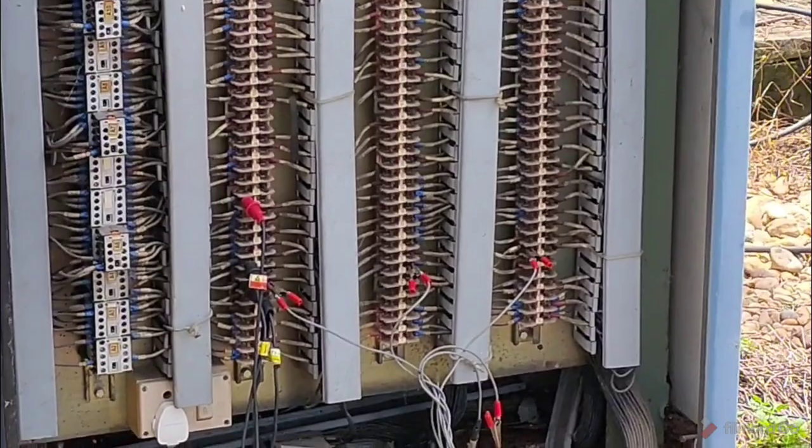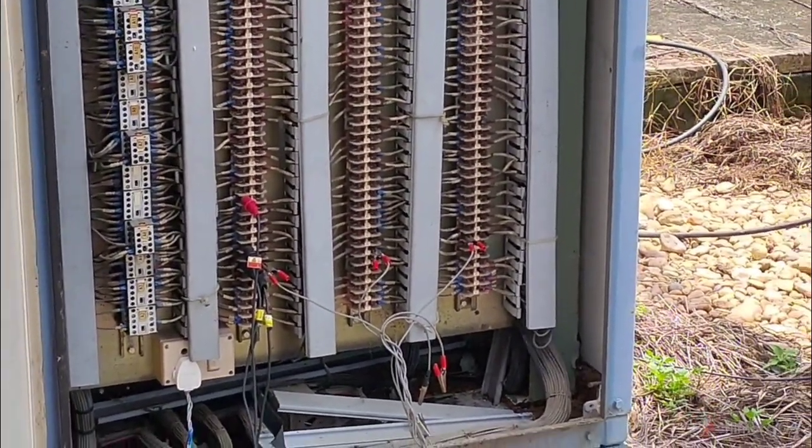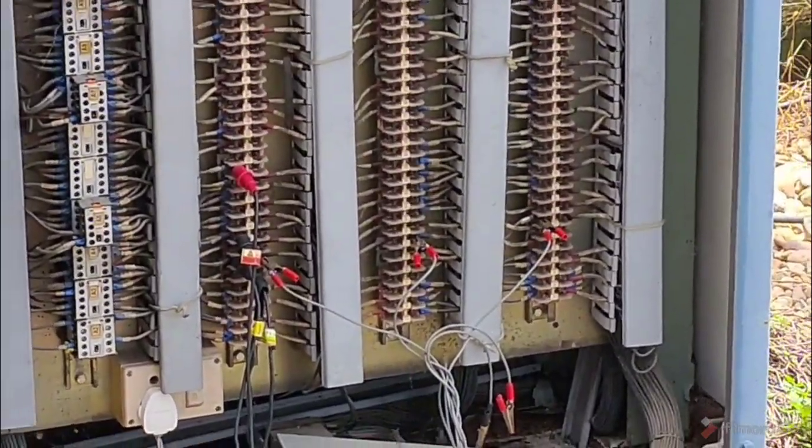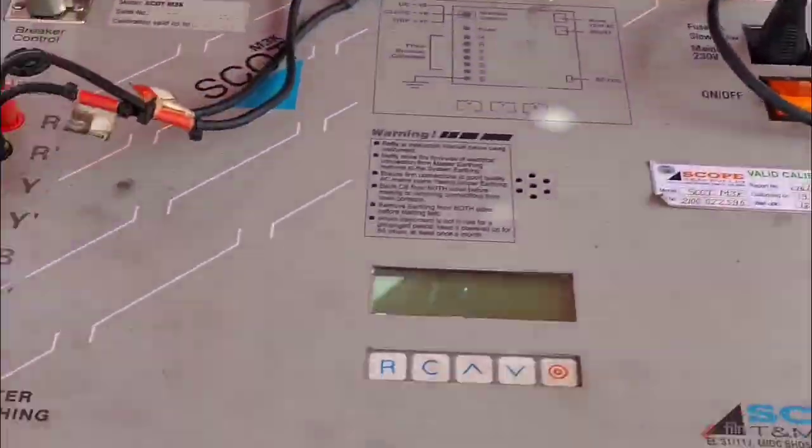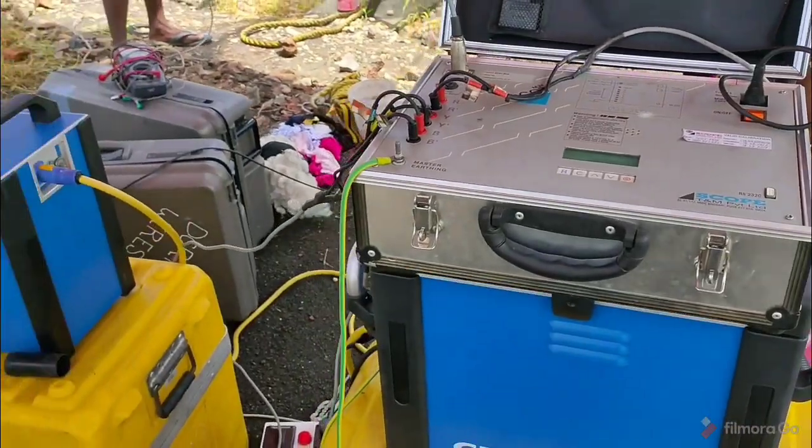This is the Tan Delta machine, and on the top I am keeping the cycle test machine. I am doing the cycle test of a 220 kV pass coupler or 220 kV breaker of Areva make.